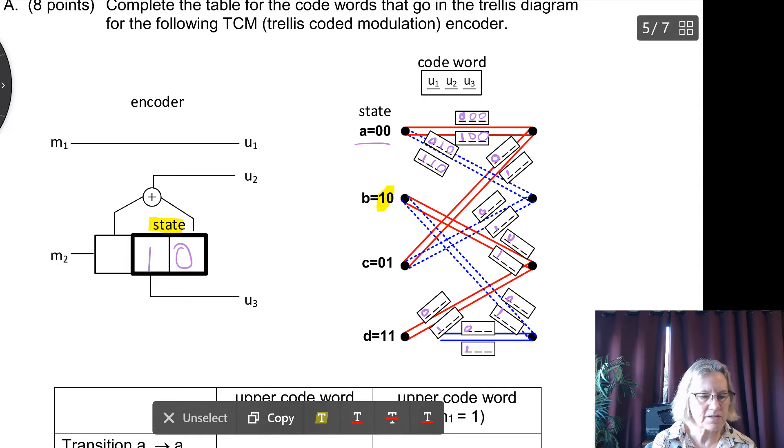There are two transitions because, of course, there are two inputs. It could be a 0 or it could be a 1. If I have a 0 that comes in, then I'm going to be going from state B to state C.